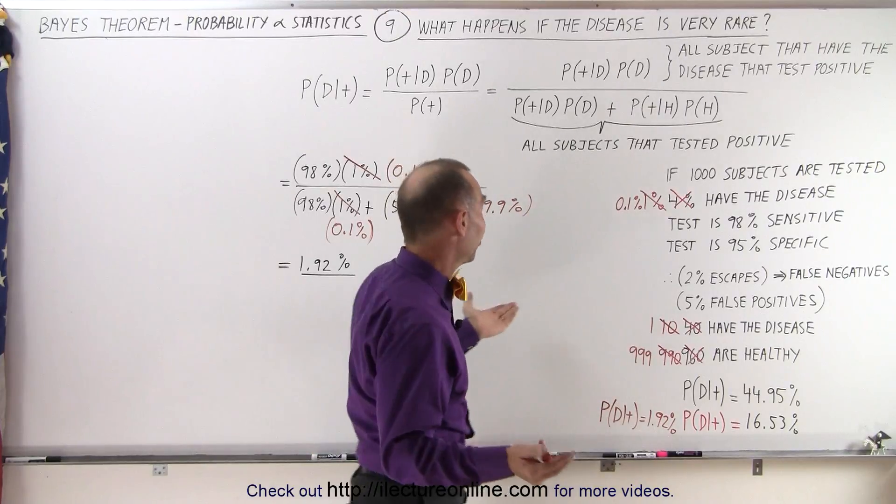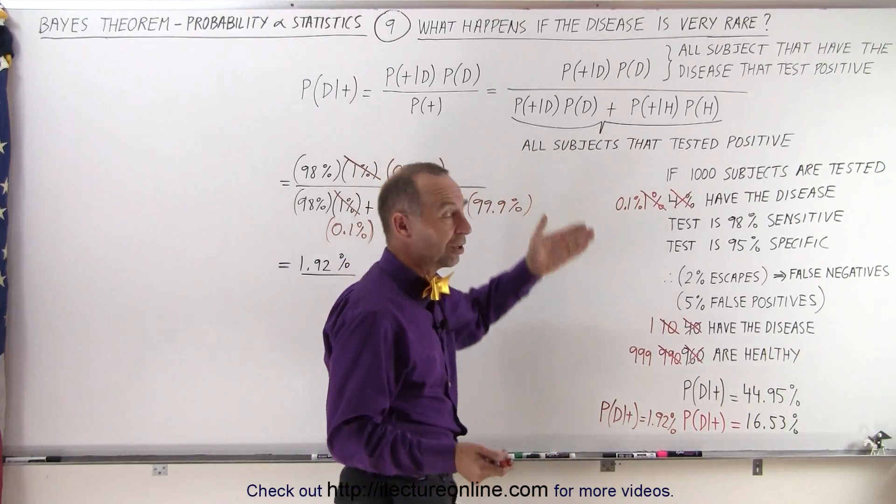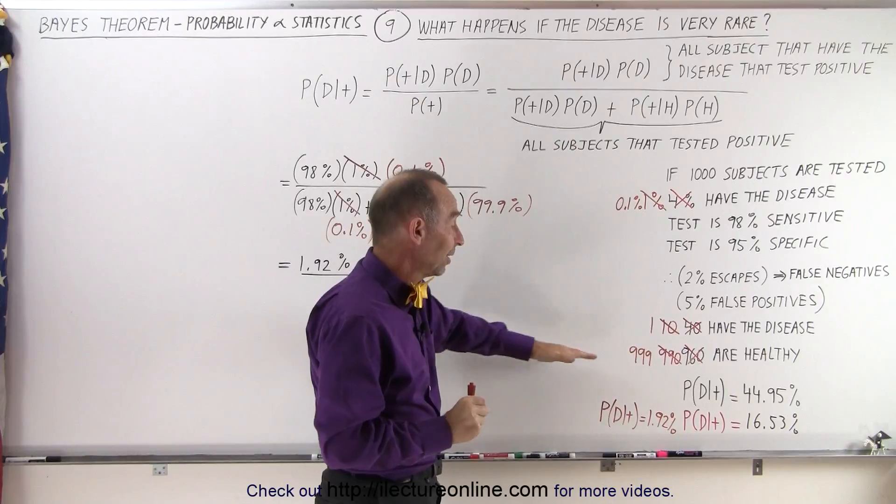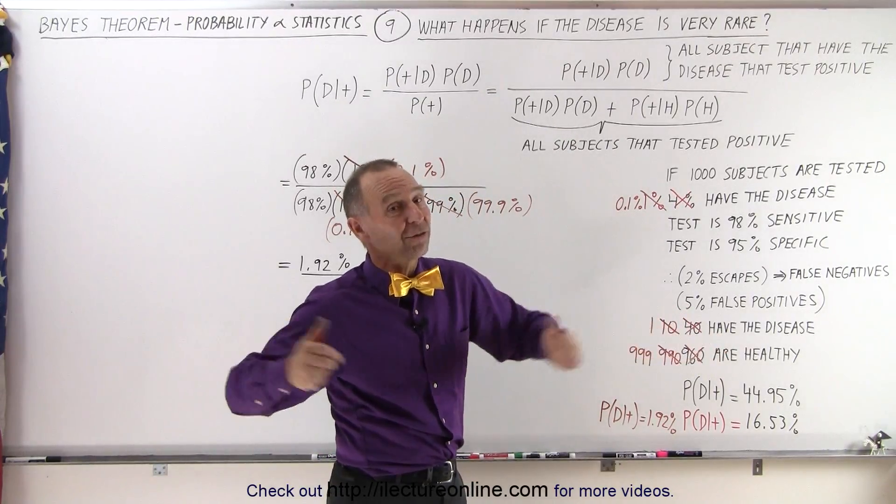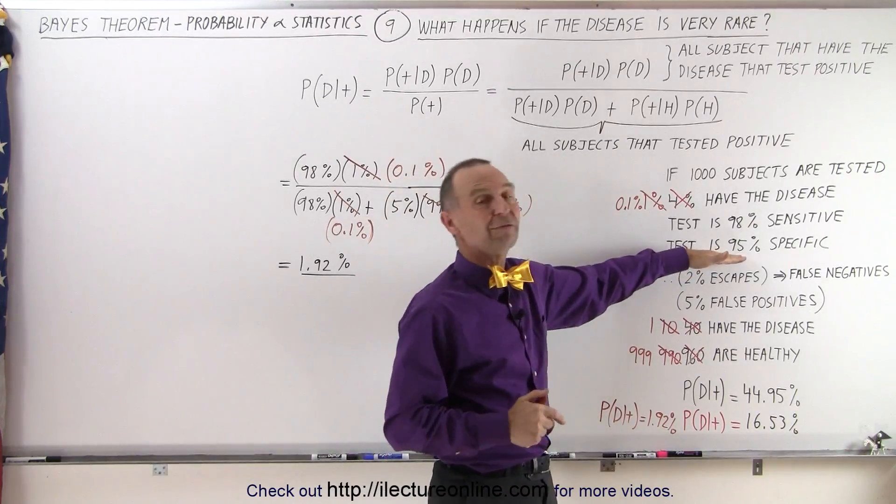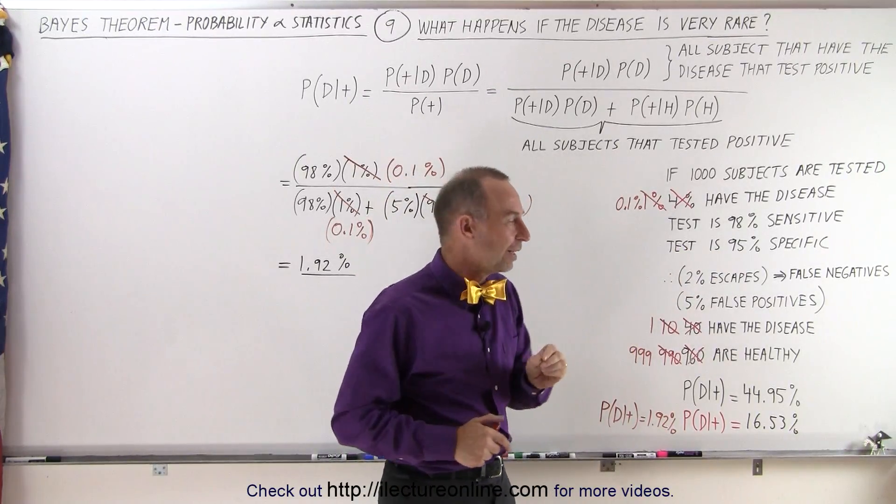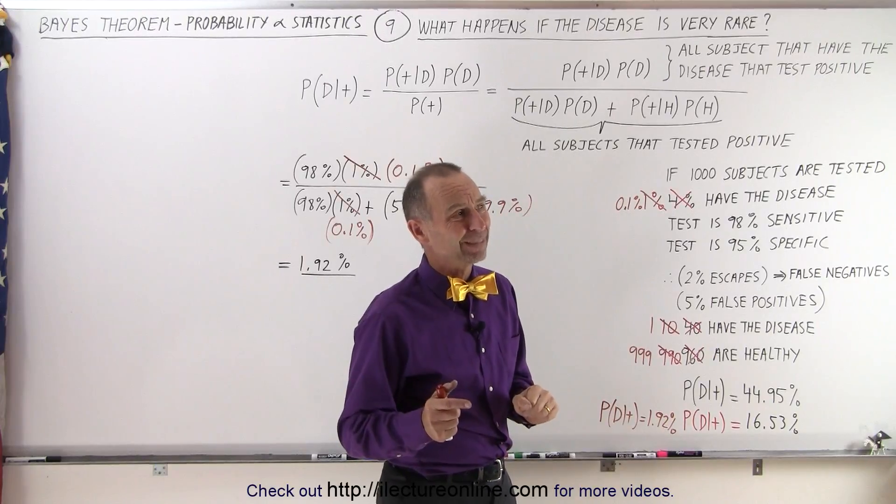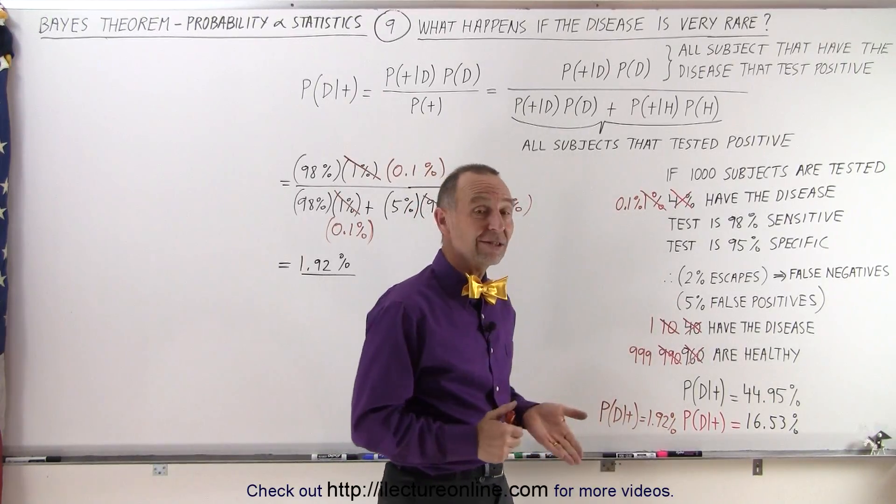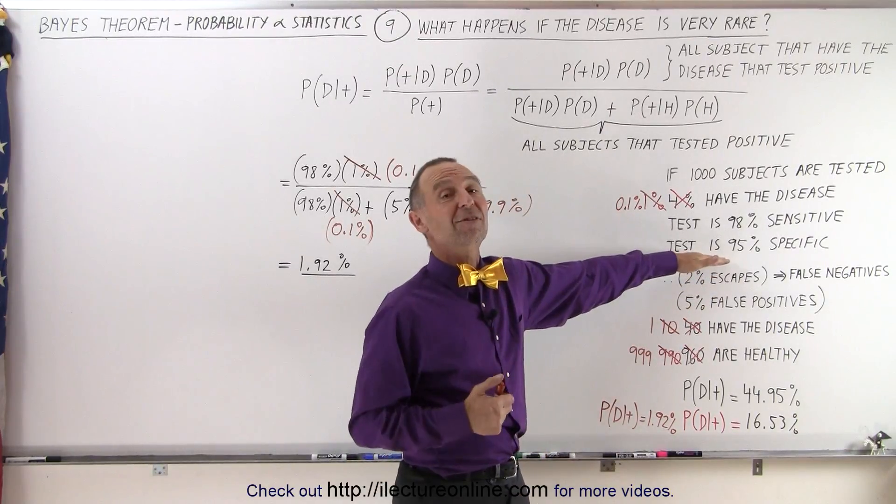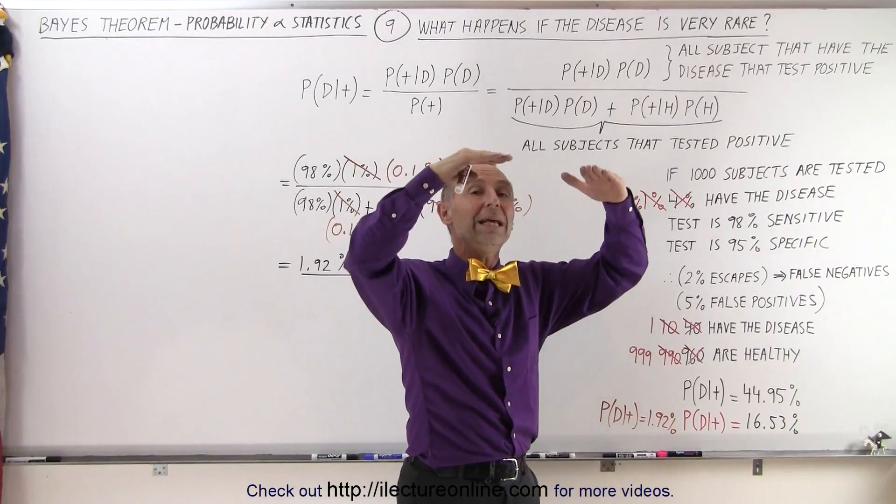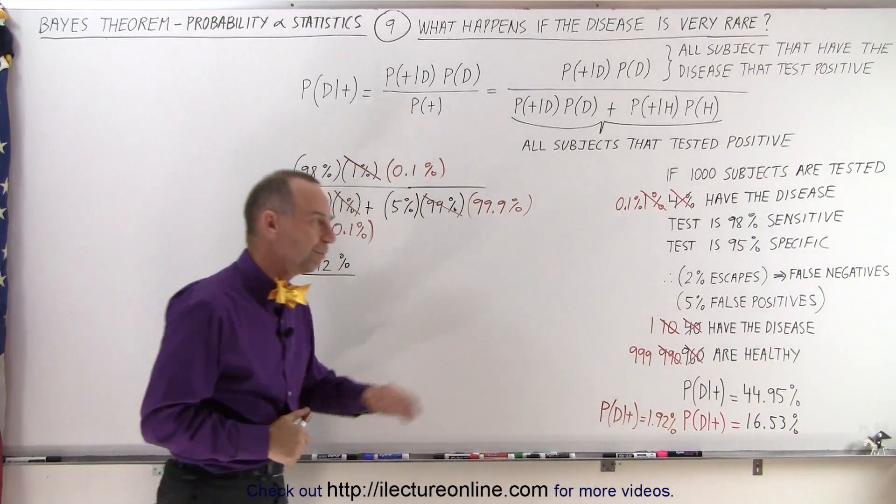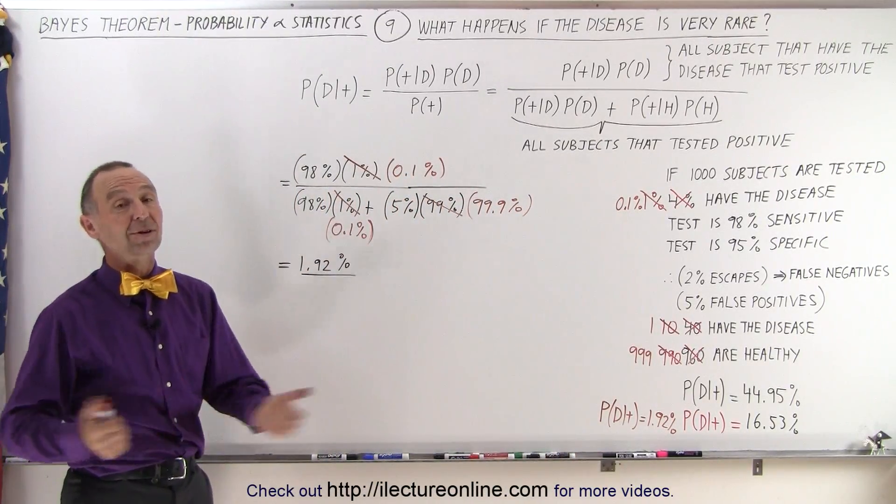So the lesson learned here is, first of all, when the people that have a condition you're looking for are very rare, the probability that when you do get a positive result that person has that condition is very low, unless you can somehow get rid of the false positives. If your test is so good that it almost never flags a false positive, then you would still get good results out of the test. I think we should do another example to show that that's indeed the case. So let's do one more. And now what we're going to do is up the specificity of the test to see if that indeed does raise the probability that if a person is tested positive, they do indeed have the condition you're testing for.